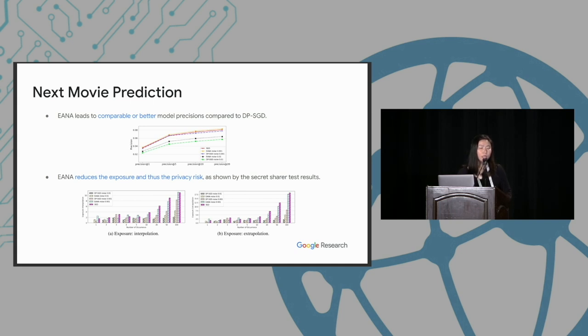And here are the results we got for the next movie prediction task. So for experiments, we train the model with three different algorithms, the normal SGD, DPSGD, and IANA. We use the baseline as the model performance when training with SGD without adding any noise. And for DPSGD and IANA, we actually use two different noise multipliers, 0.01 and 0.001. We measure the model performance using precision, recall, and the exposure of the secret sharer test. Here I only show the precision because recall also follows the similar trend. In the last chart, we see that IANA actually leads to comparable or better model precision compared to the traditional DPSGD, and it effectively reduces the exposure and thus the privacy risk as shown by this secret sharer attack result.